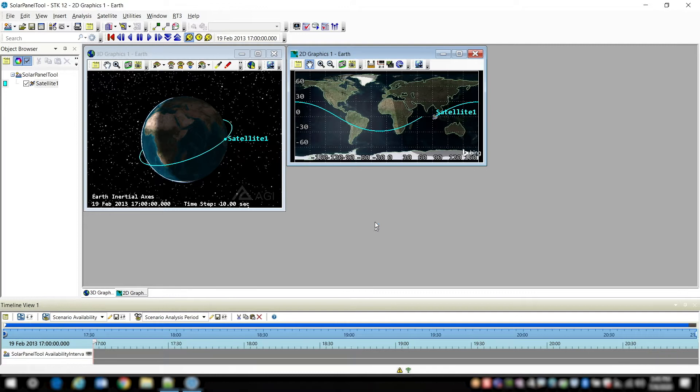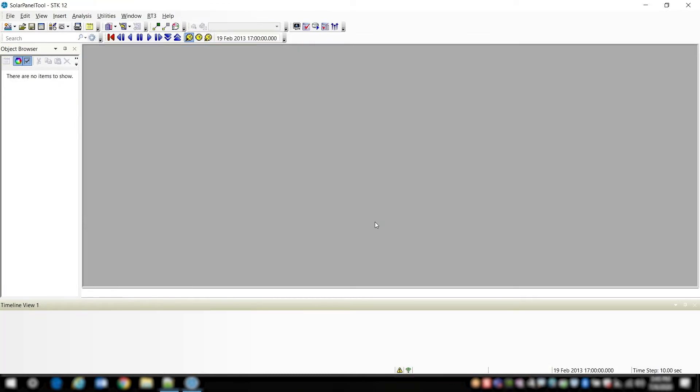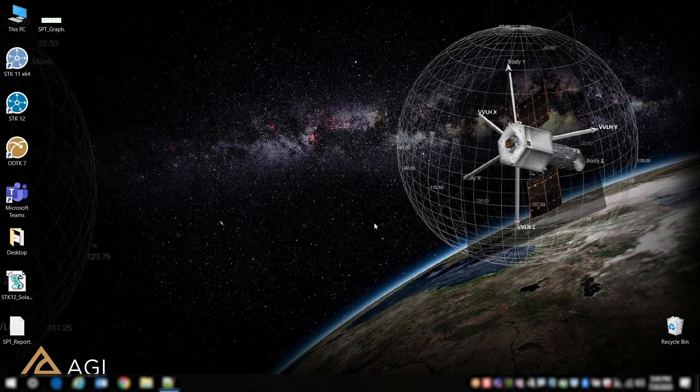All right, so now that we have a little bit more background about how the solar panel tool works, let's go ahead and look at some of the results. So we can go and click OK, that's going to close down STK for us, and bring us back to our desktop. And now we notice we have a couple different files there.